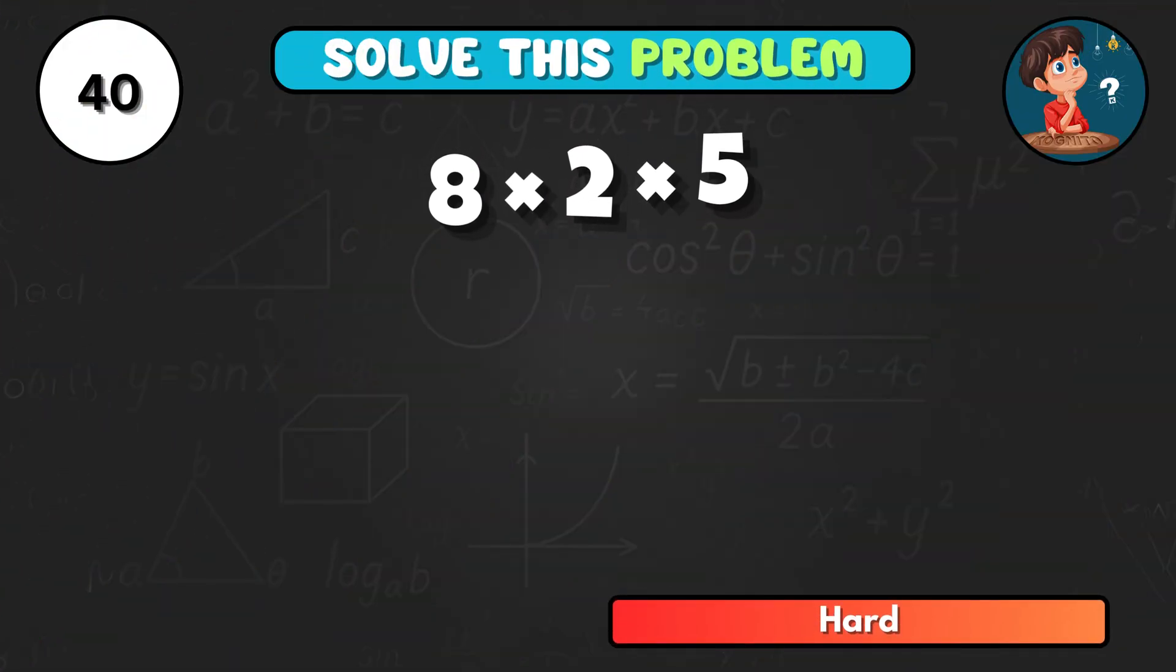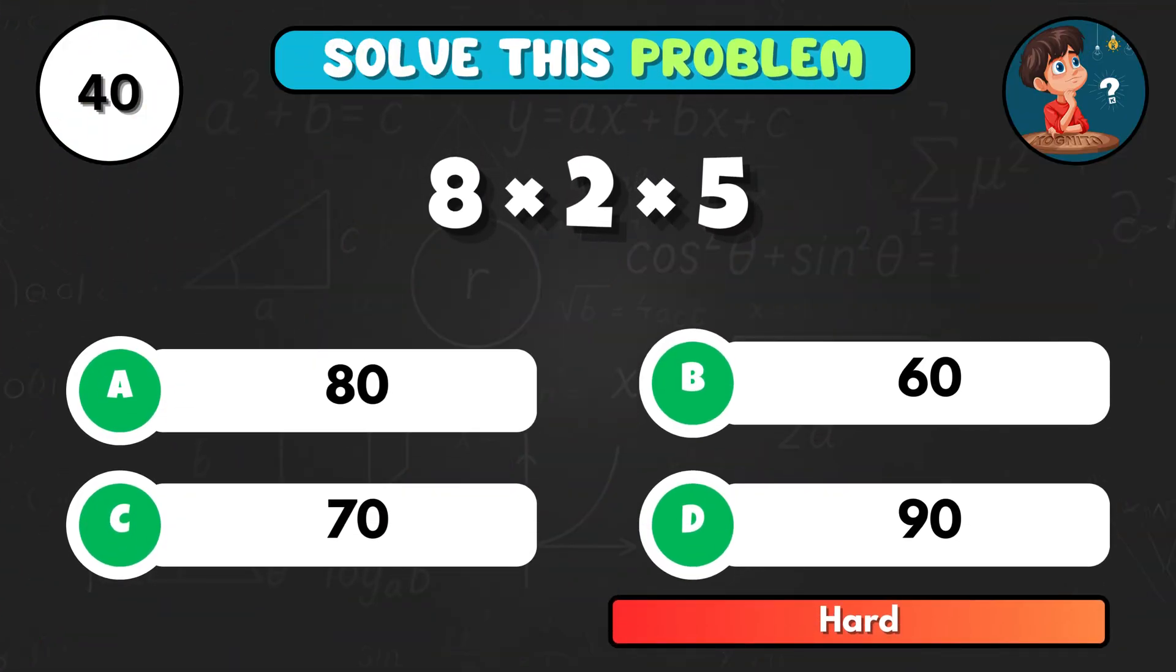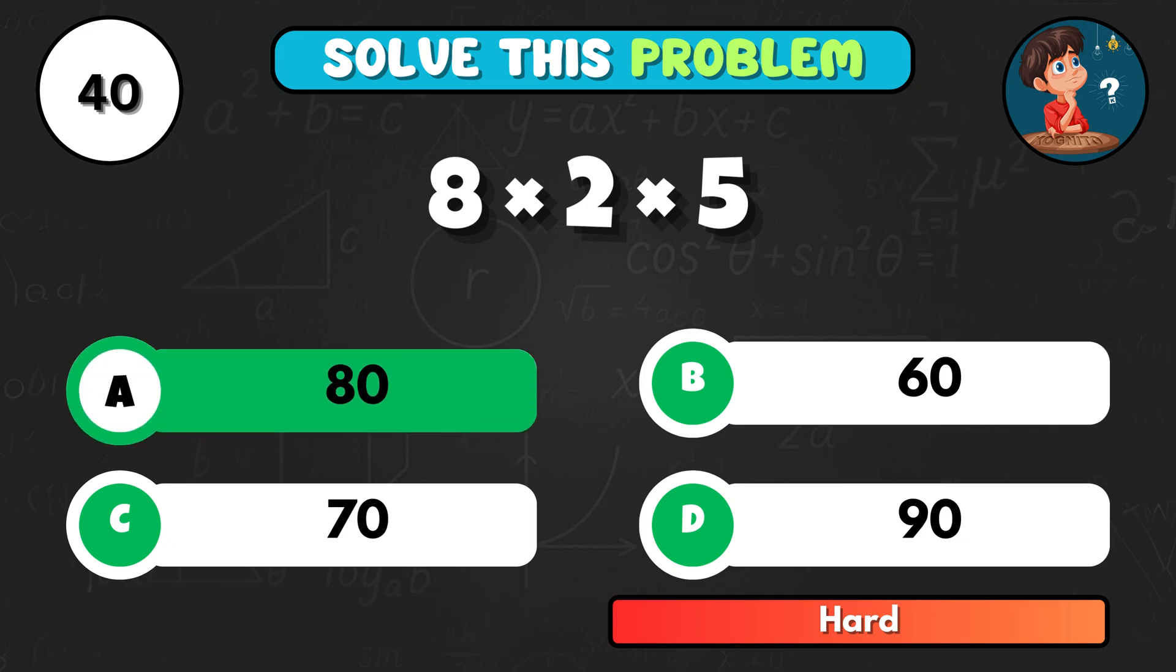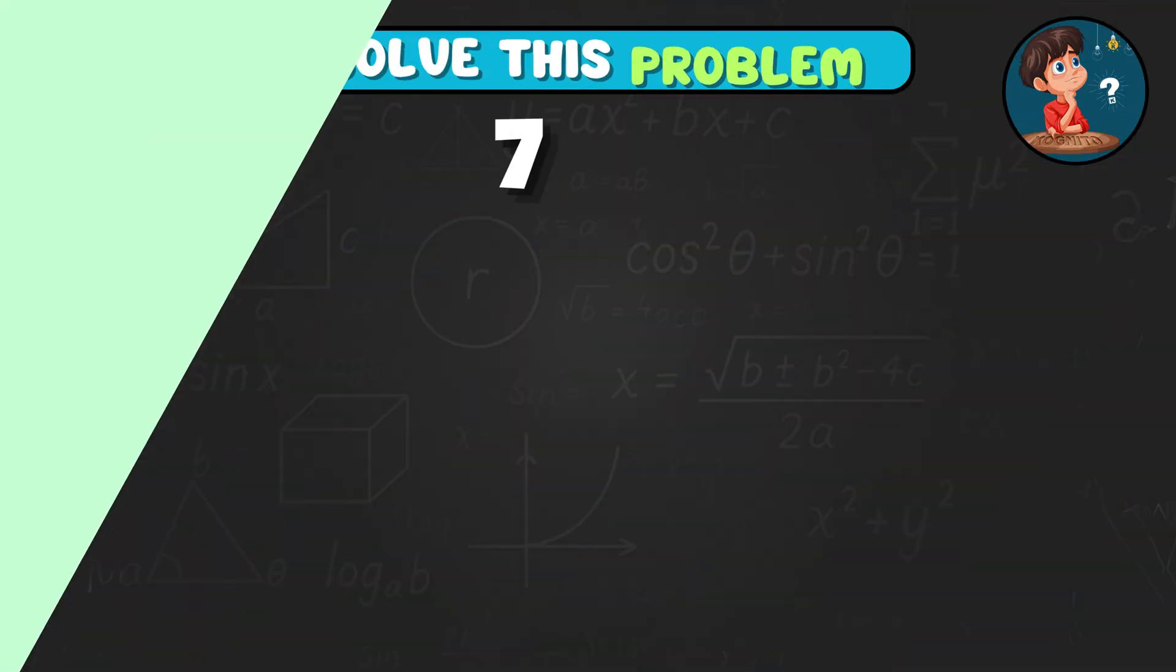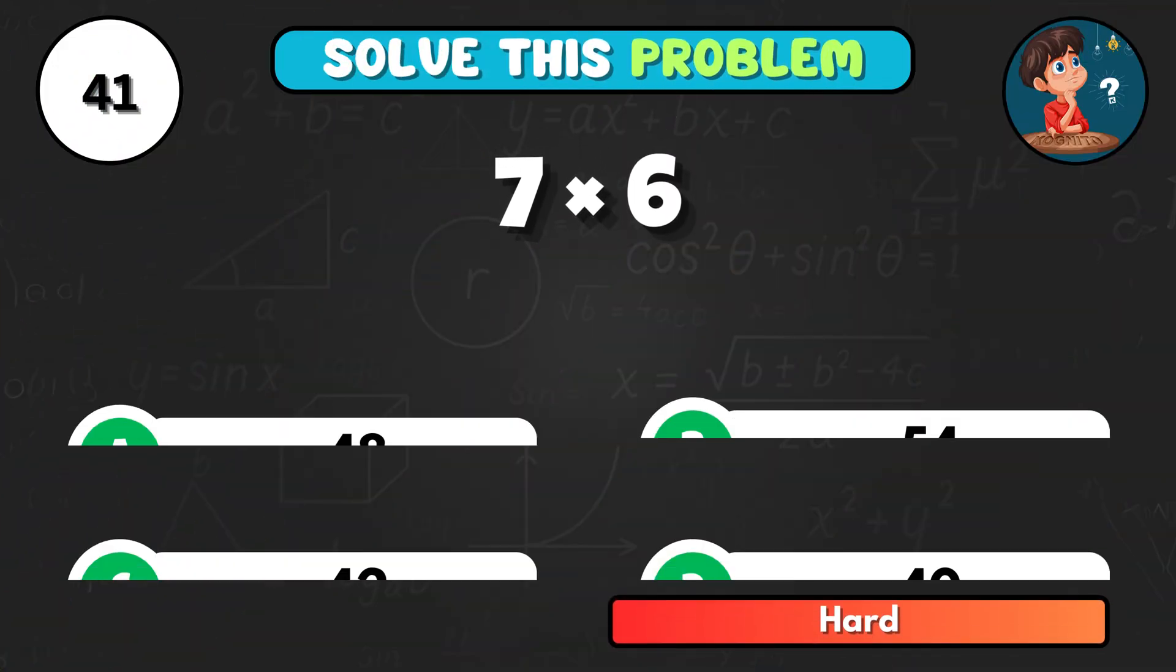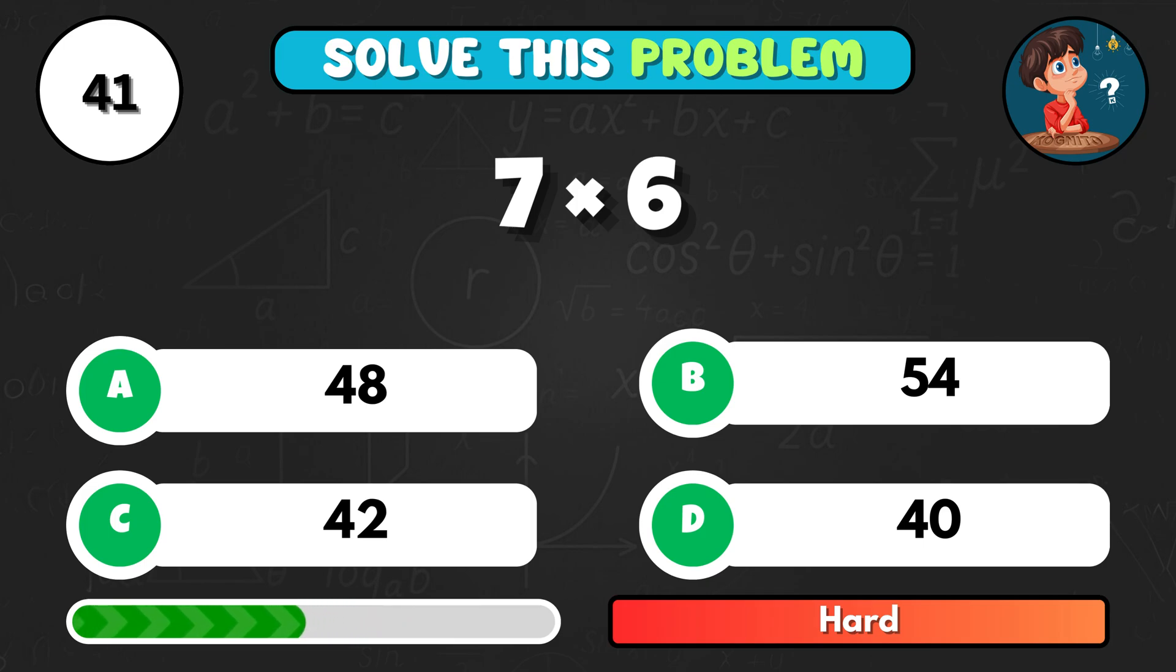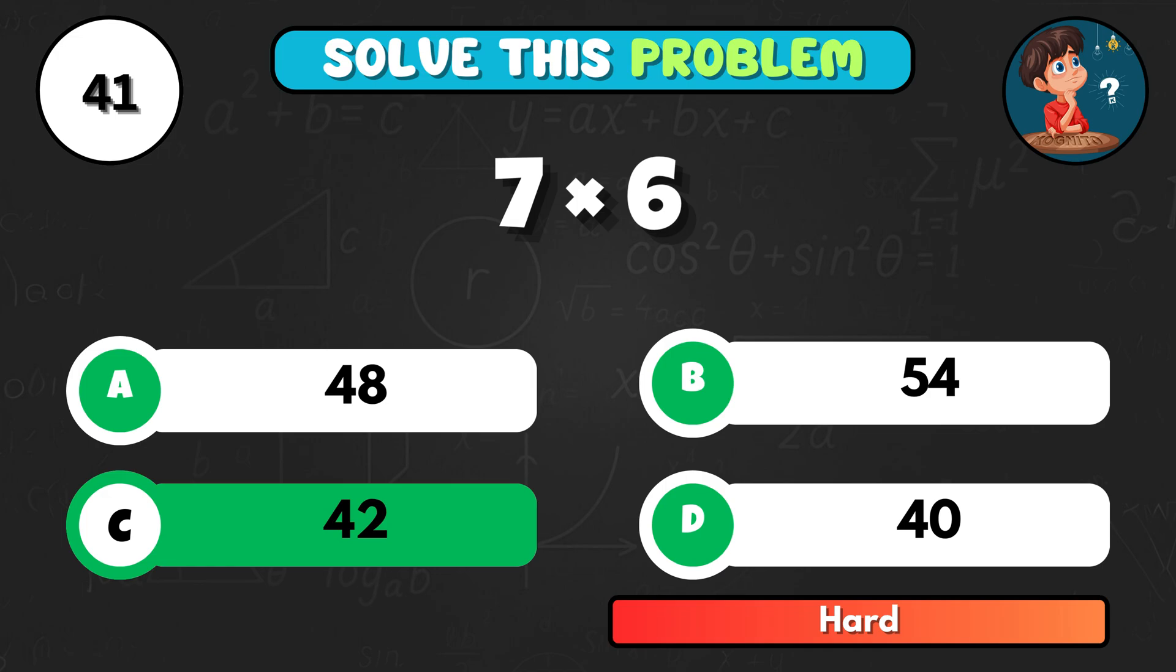Another quick one. 8 times 2 times 5 equals... It equals A, 80. What's 7 times 6? That's C, 42.